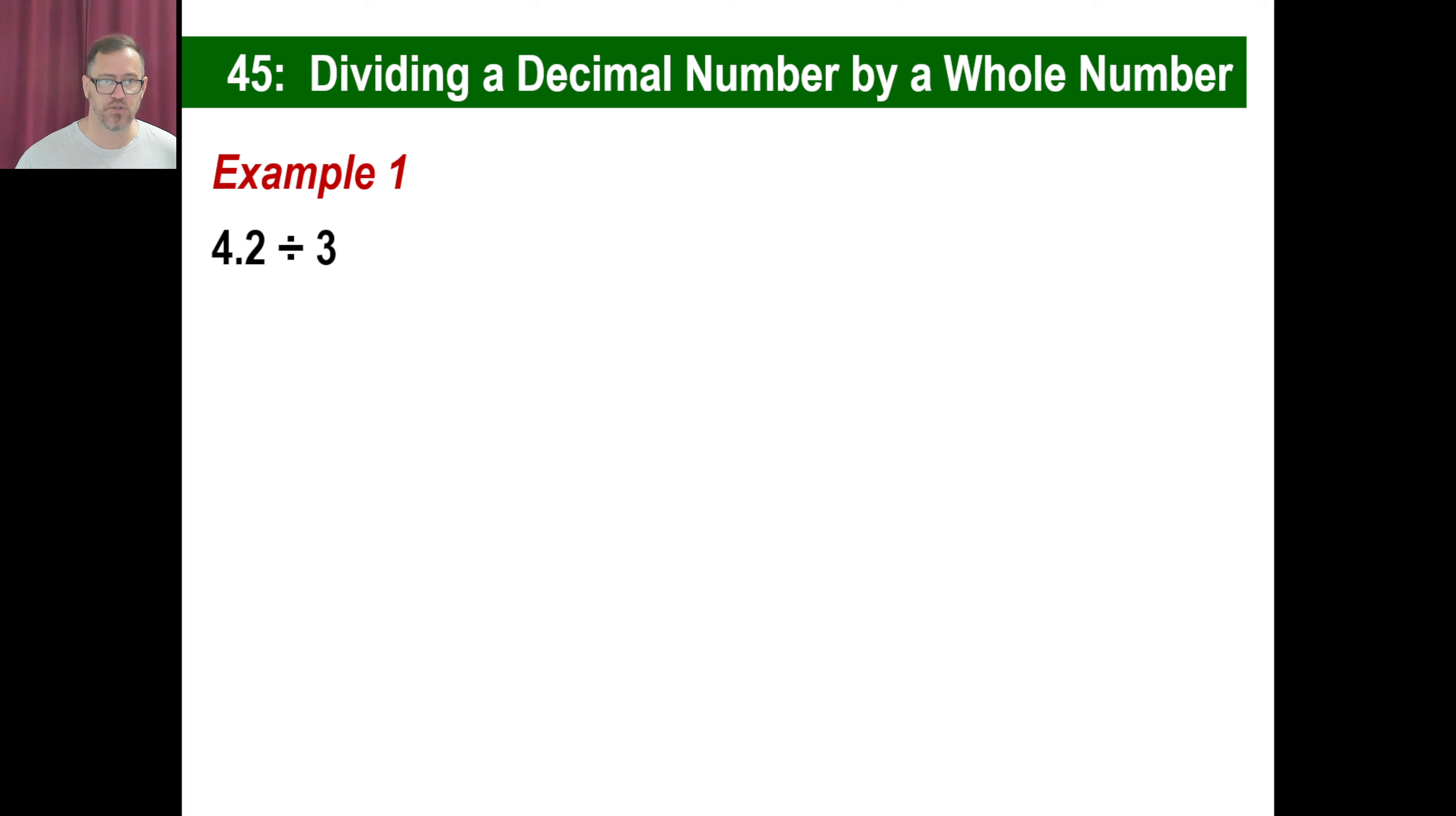All right, let's do some of these. 4.2 divided by 3. Exactly the same thing, right? 3 into 4.2. And plop your decimal right there. 3 into 4 is 1. I'm just going to do short division for a while. 1 times 3, 1 left over there. So 3 into 12 is 4. There you go. That's all there is to it.